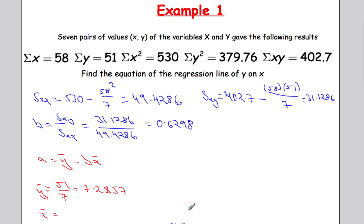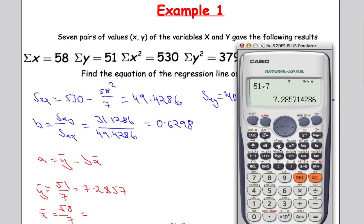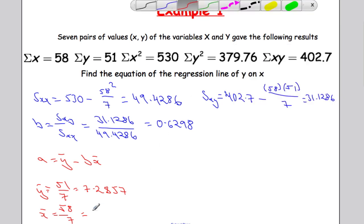And x bar is given by the sum of the x's, 58 divided by 7. So 58 divided by 7 gives 8.2857.